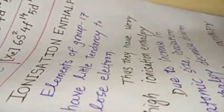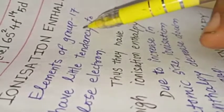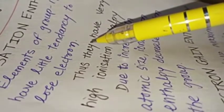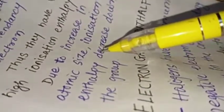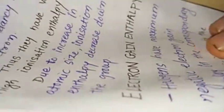Now we want to study the ionization enthalpies. Elements of Group 17 have little tendency to lose electrons. Thus they have very high ionization enthalpy. Due to increase in atomic size, ionization enthalpy decreases down the group.